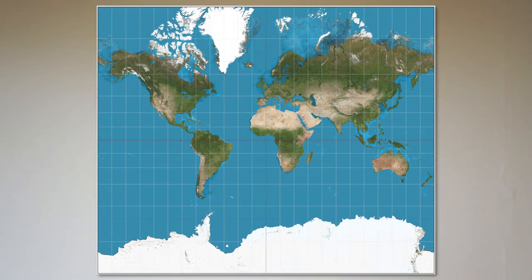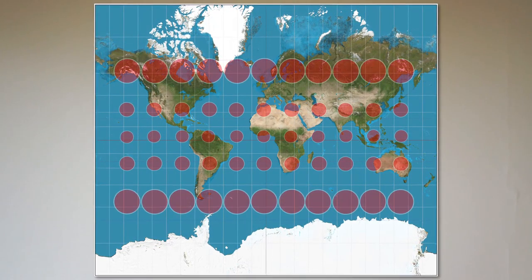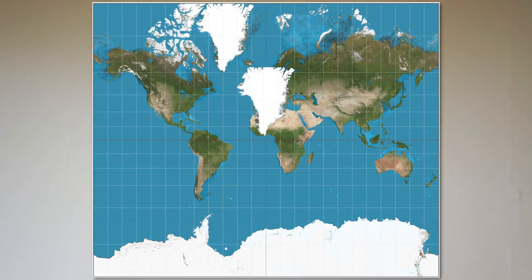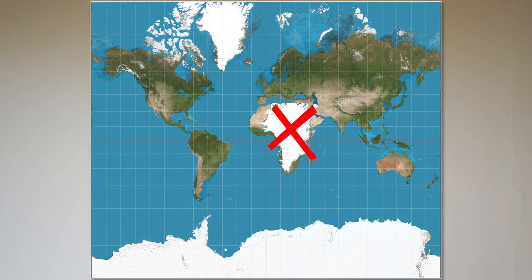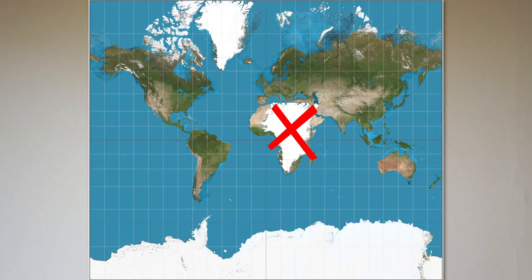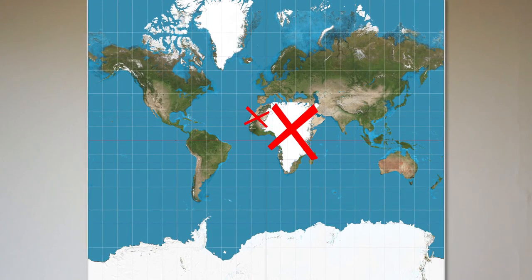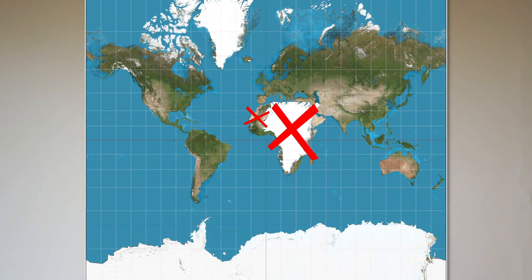The further away you come from the equator, the larger everything is projected. As you see here, Greenland is for instance nowhere near as big as Africa. And my home country Norway is far from the size you might think looking at the Mercator projection.